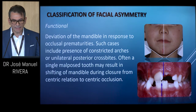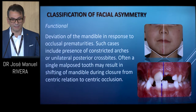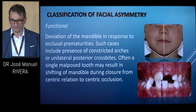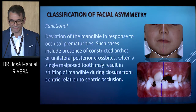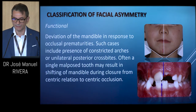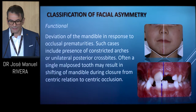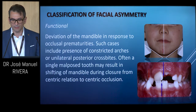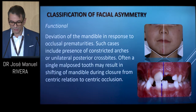A functional asymmetry occurs as a result of functional deviation of the mandible in response to occlusal prematurities. Such cases include presence of constricted arches or unilateral posterior crossbites. Often, a single malposed tooth may result in shifting of the mandible during closure from centric relation to centric occlusion.